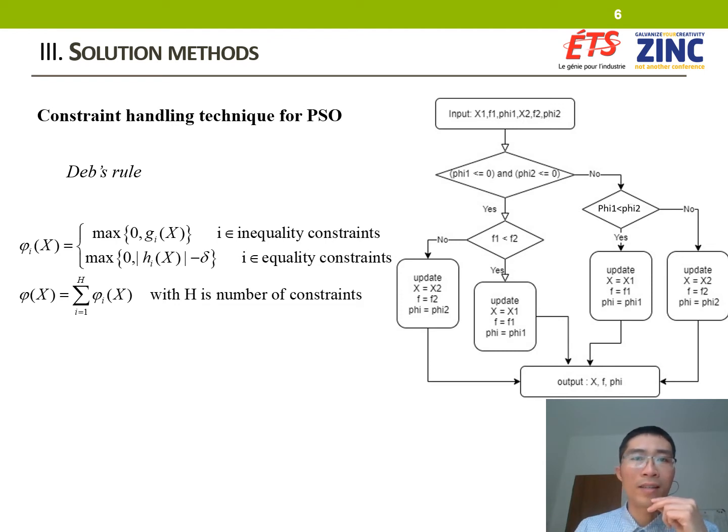It will guide the population towards the feasible region to ensure a feasible optimal solution will be found. Here, the parameter phi denotes a constraint violation degree of each particle corresponding to its position. The parameter delta is a positive tolerance parameter for the equality constraint. The flowchart illustrates the Deb's rule is presented in the right figure.